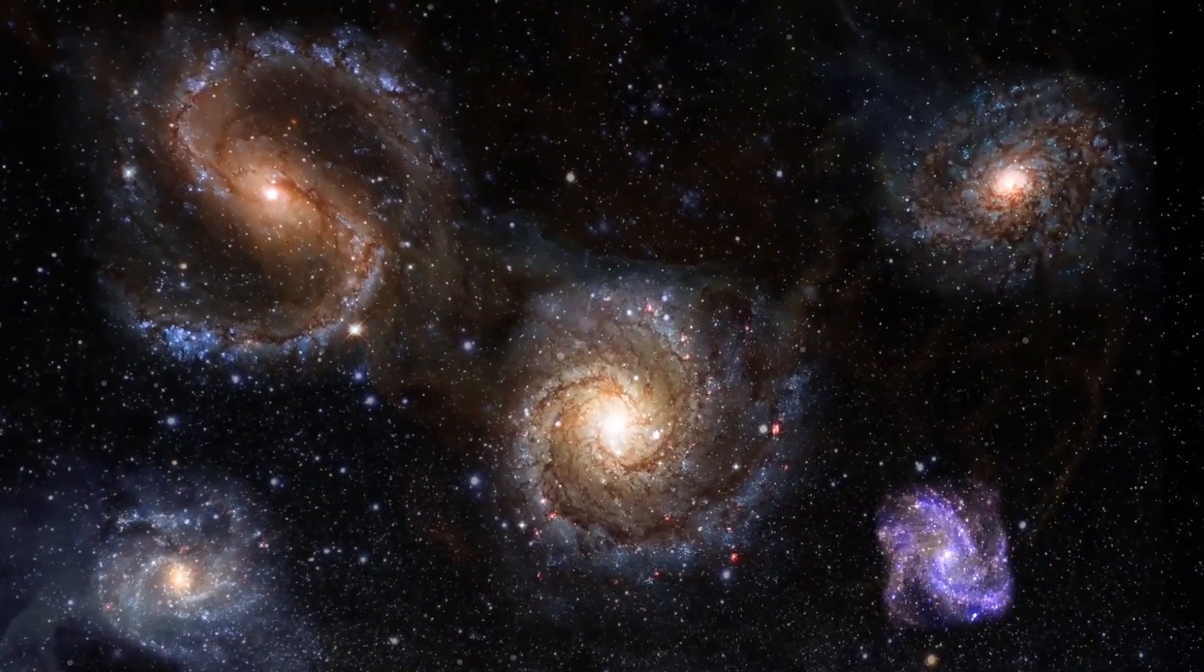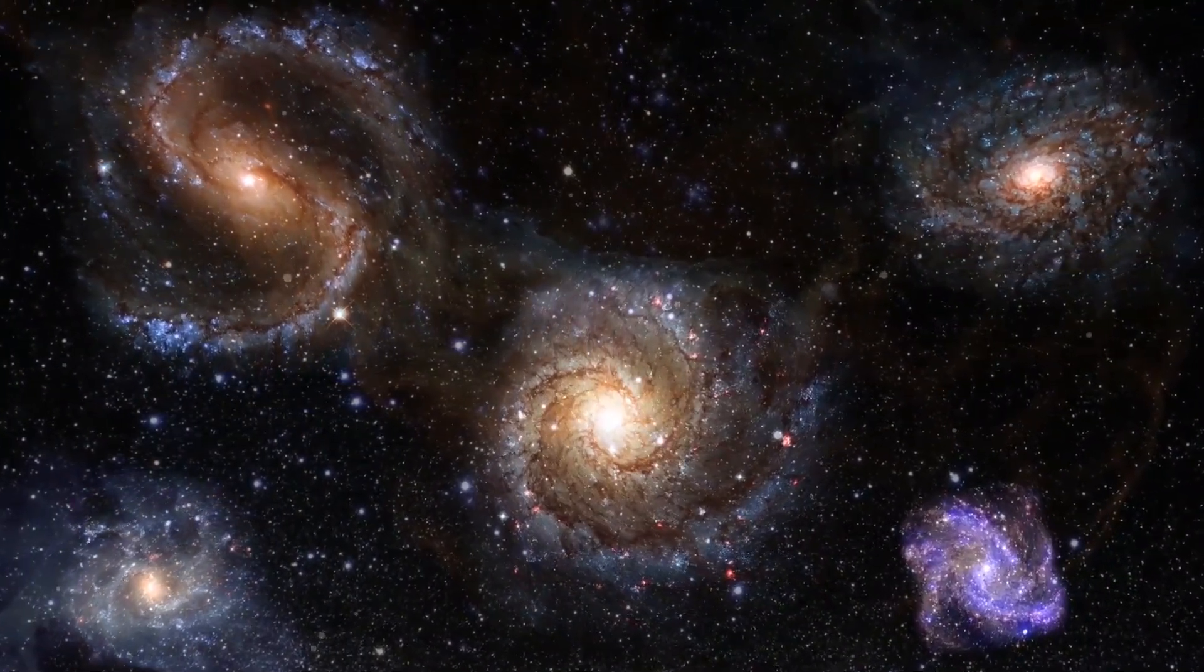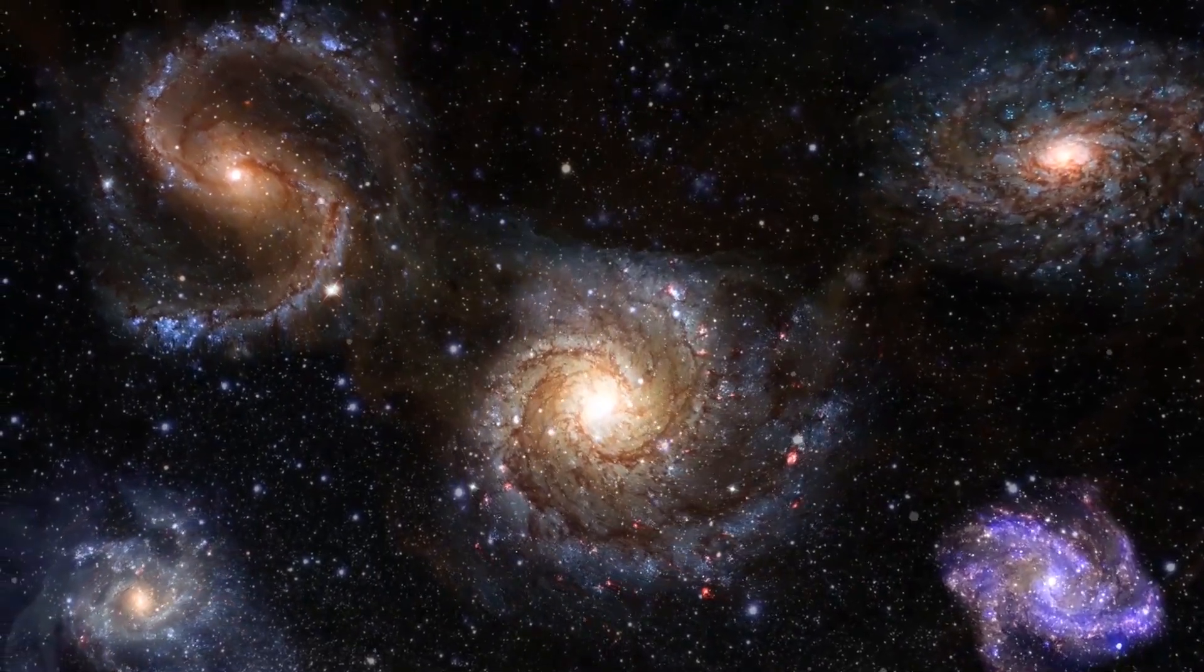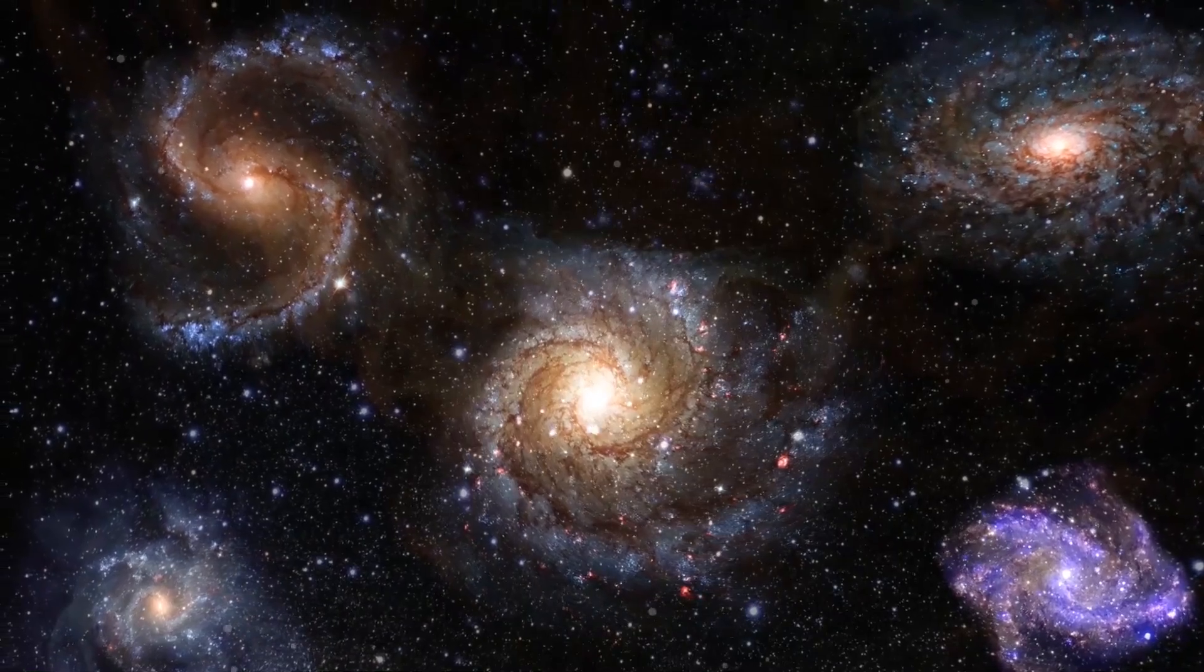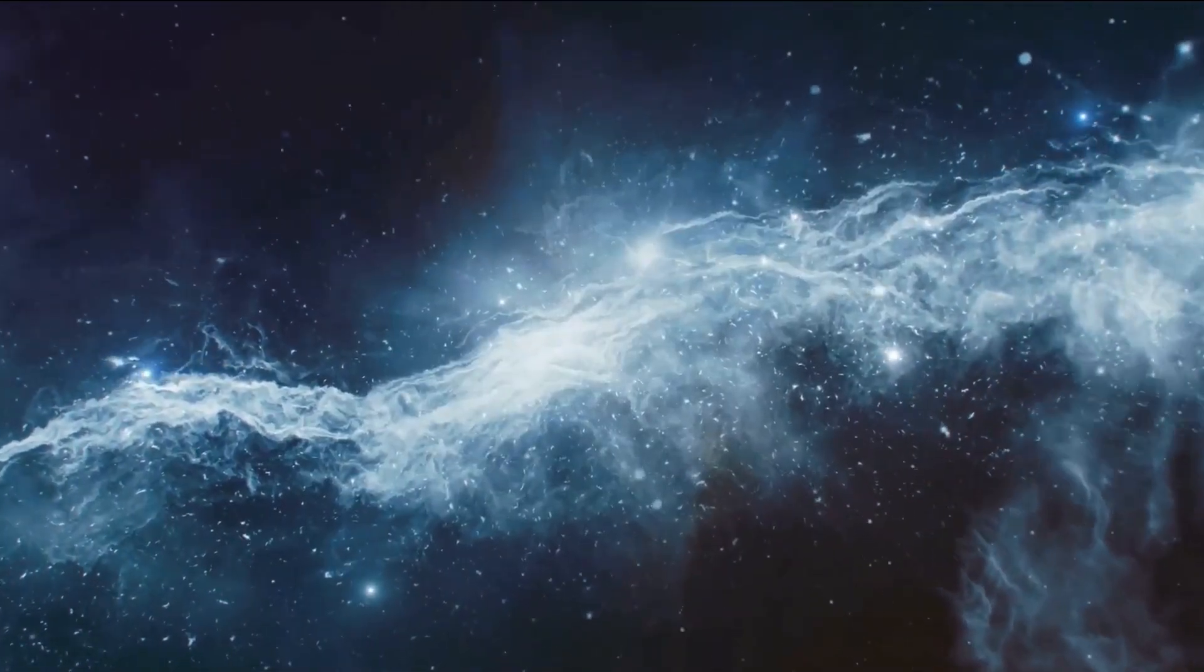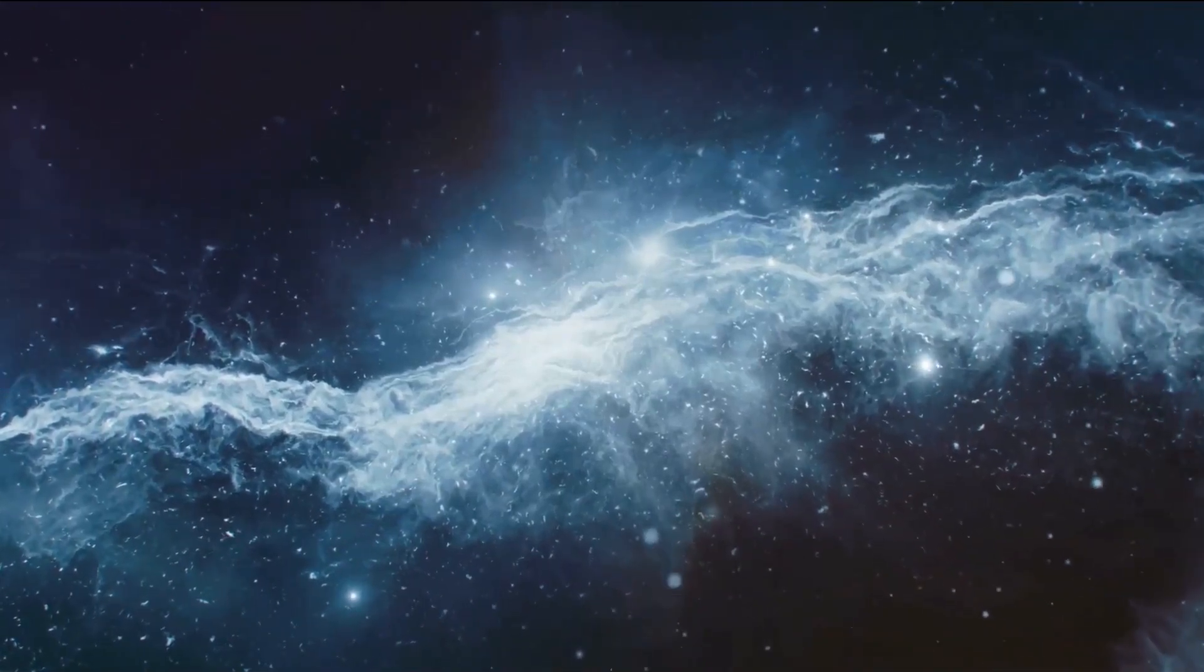We know now that the Milky Way resides within the local group of galaxies, made up of over 30 galaxies including Andromeda, Triangulum, and Leo-1, to name but a few. It turns out that it's pretty good to know who your neighbors are, as they may be closer than you think.